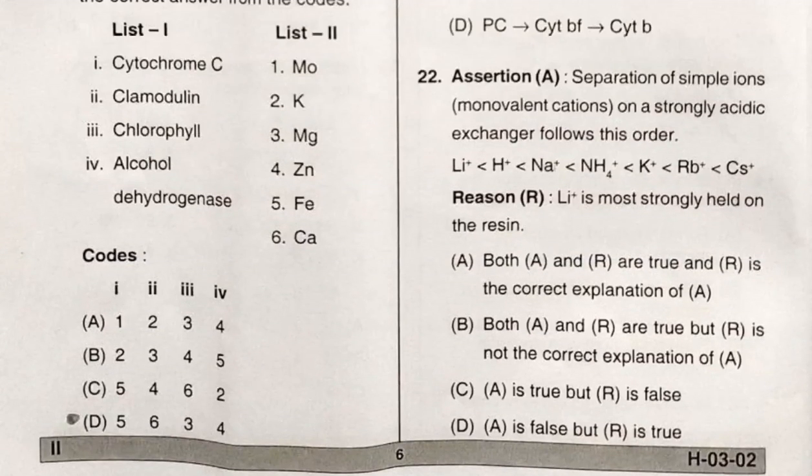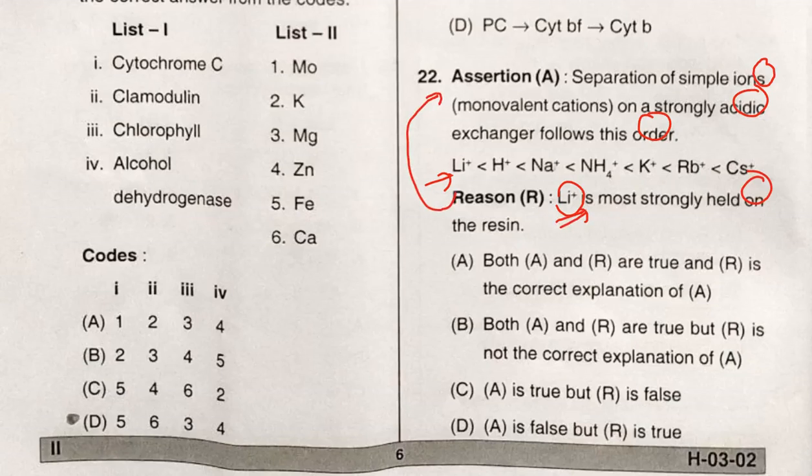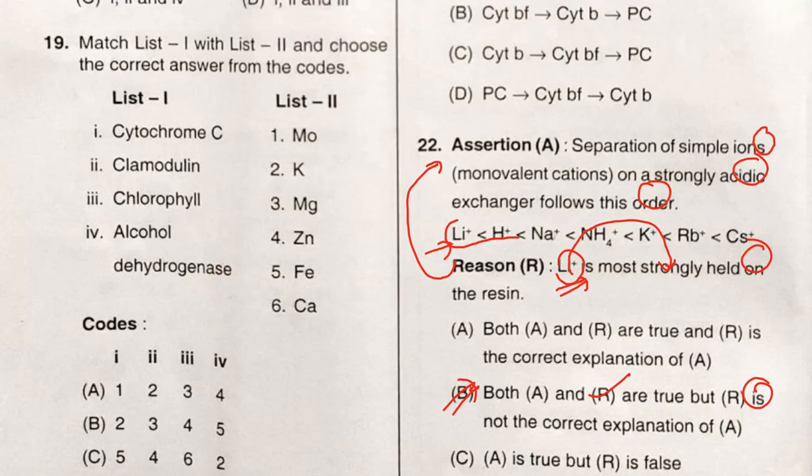Separation of simple ions, monovalent cations, on a strongly acidic exchanger follows this order. So this is the correct order. Reason: lithium plus is the most strongly held on the resin. This is a correct statement but this reason is not the correct explanation. So option B is the correct answer.